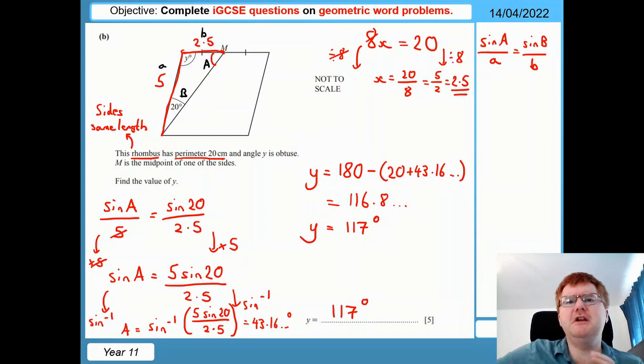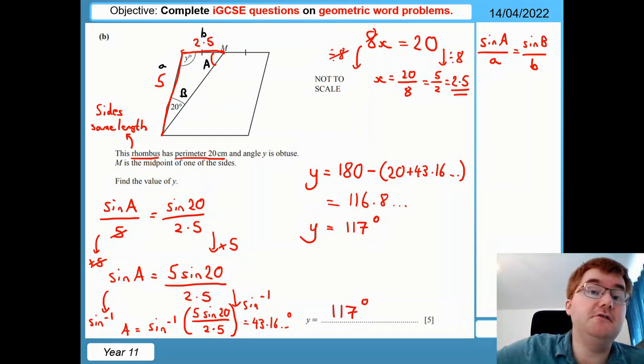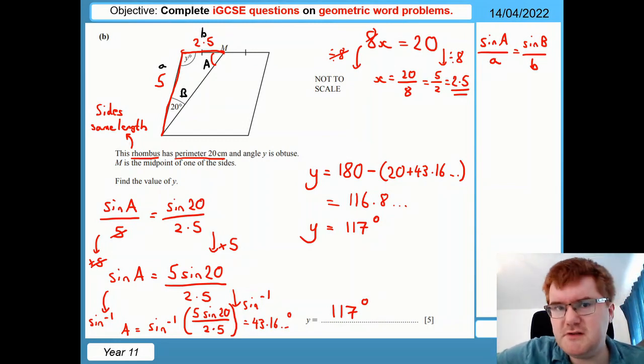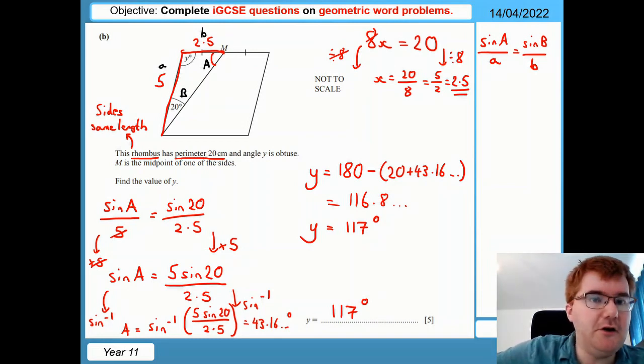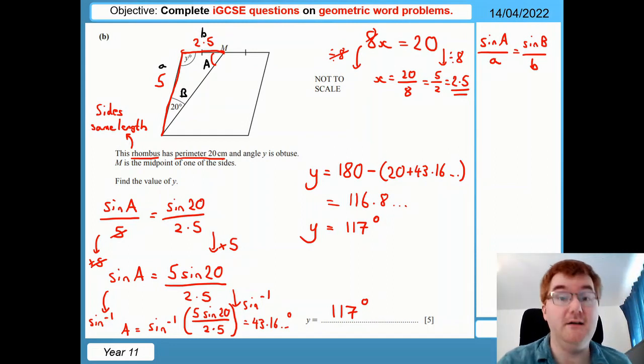So just be aware in these geometric word problems that it can involve other skills that you're used to from the course. So in this case, we used our knowledge of quadrilaterals. They're very straightforward to work out the sides of the same length. And then we use the sine rule actually to help us work out the missing angle. So as soon as you see a triangle, regardless of the problem, and you've got missing angles, missing sides, think about the sine rule and think about the cosine rule, which we're going to talk about in part C.